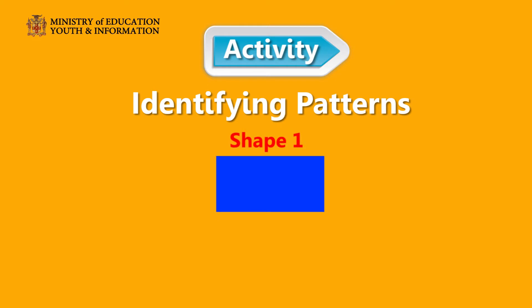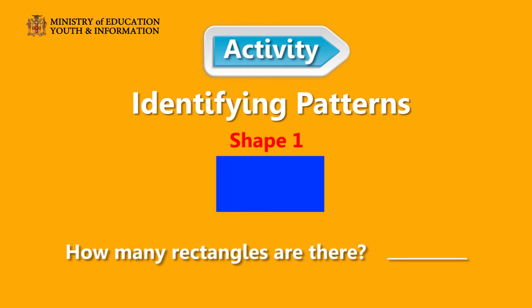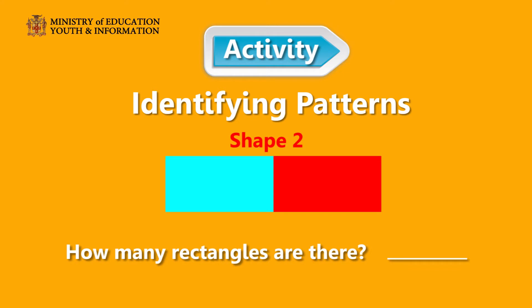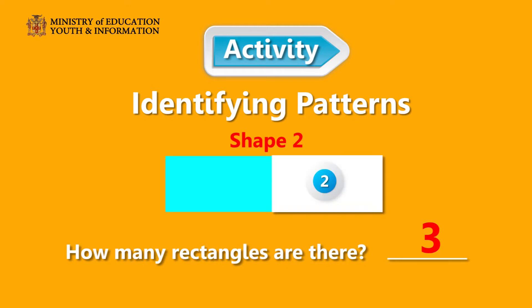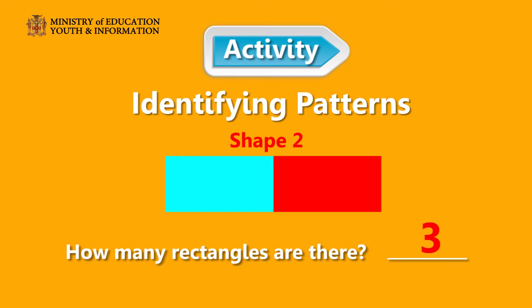This is shape 1. How many rectangles do you see? Yes, one! This is shape 2. How many rectangles can you count? Is it 2 or 3? If you say 3, you are correct. Let us check. There is one here, one here, and another here. So we have 3 rectangles.